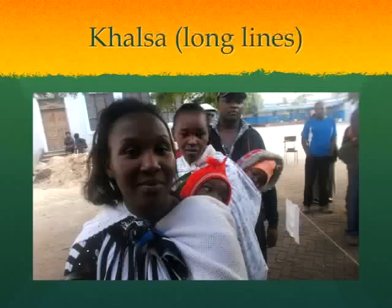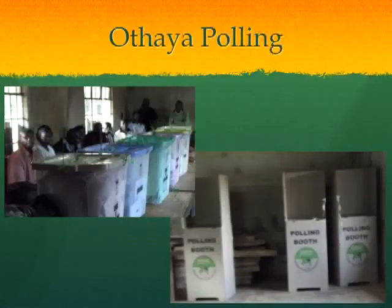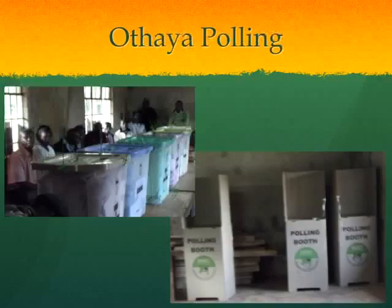This gives you a sense of what the polling process looked like. They had different colors representing different races — white is the presidential election, pink was the women's candidates. Each of the different races had a different color, and you got six different ballots.